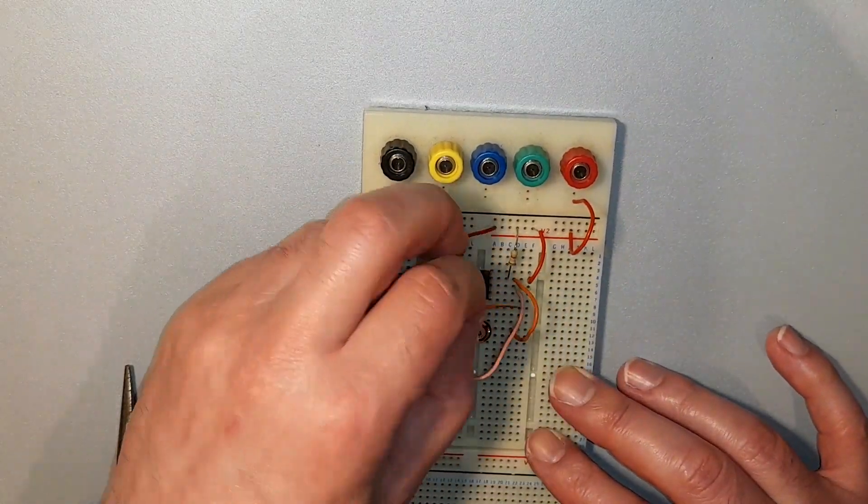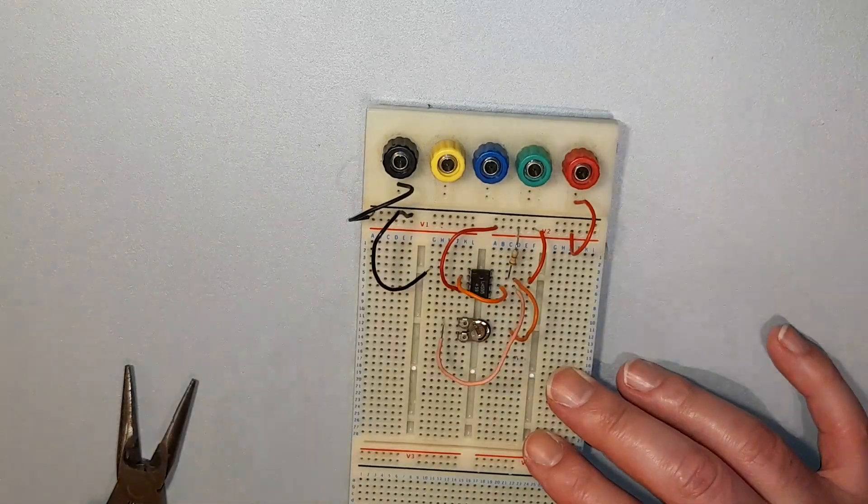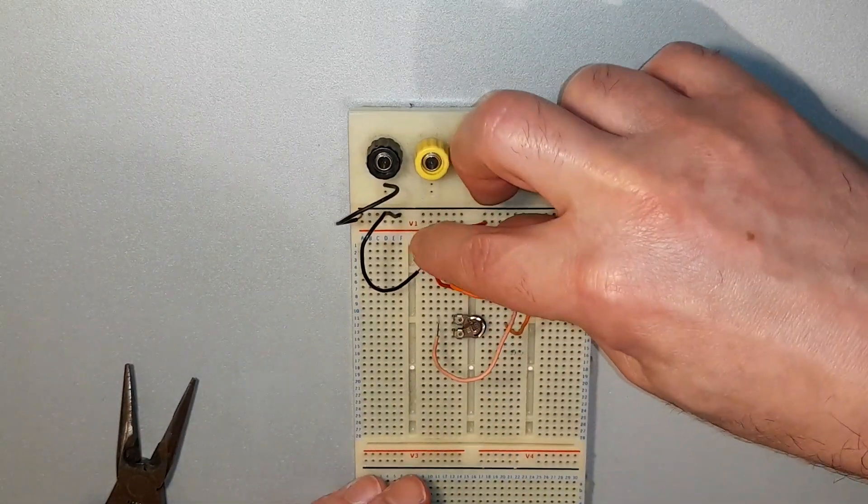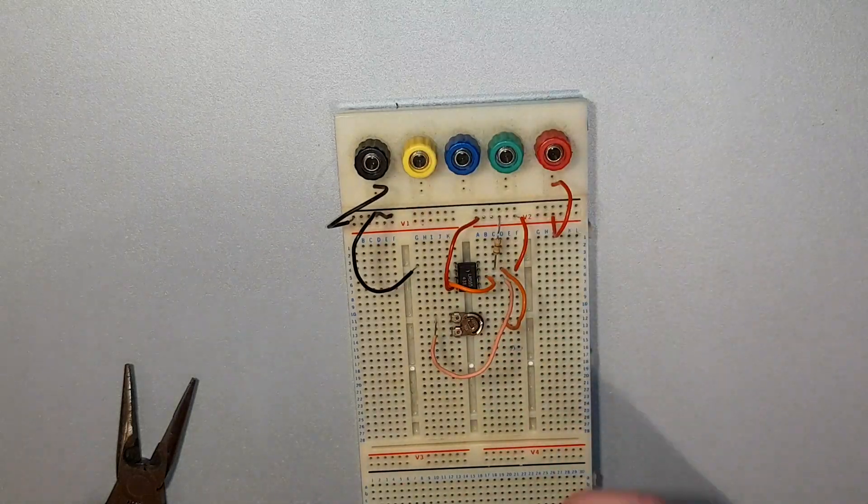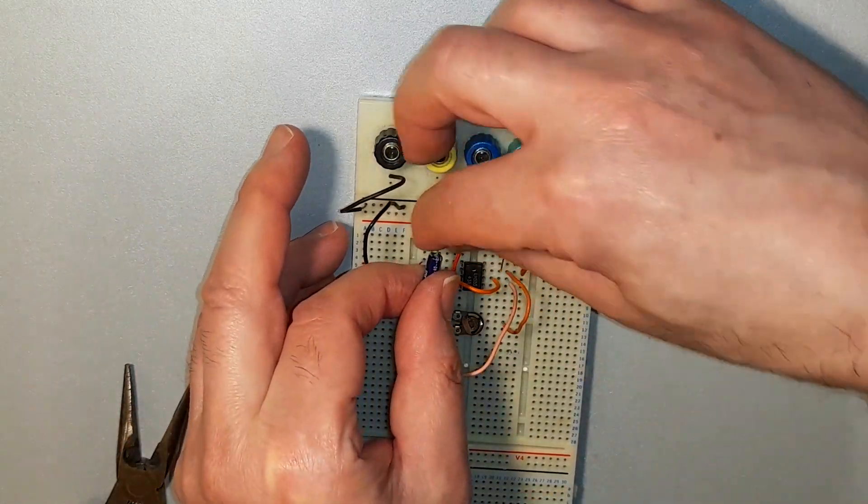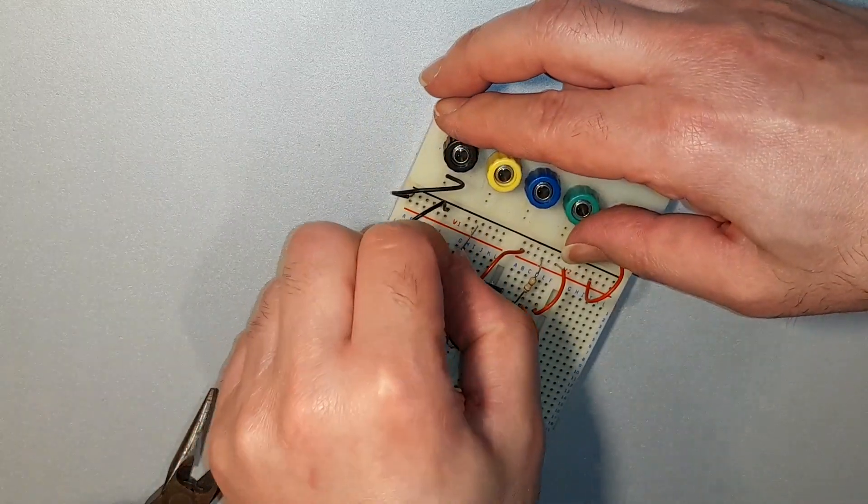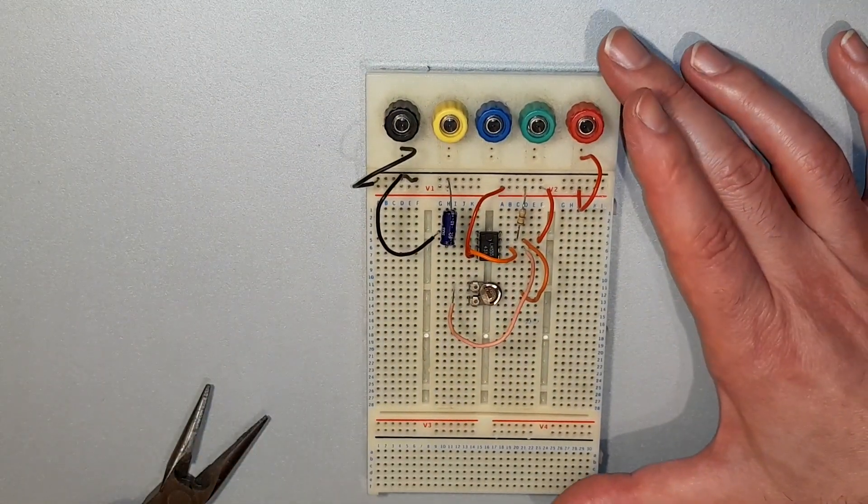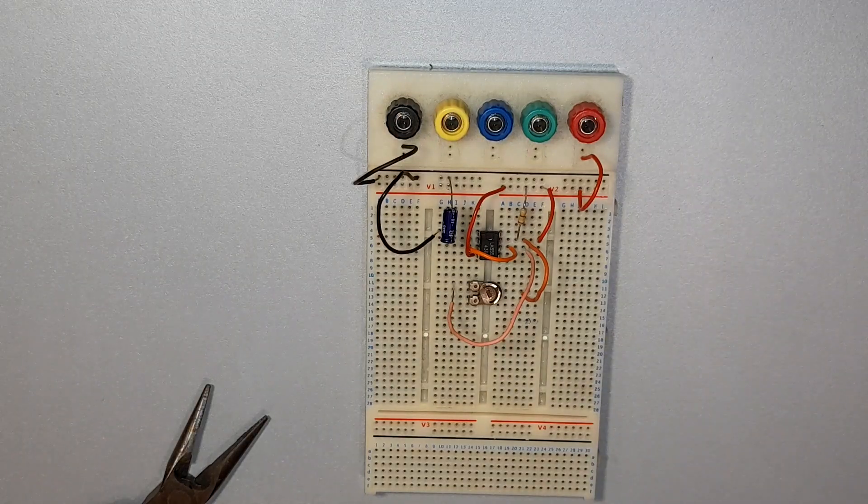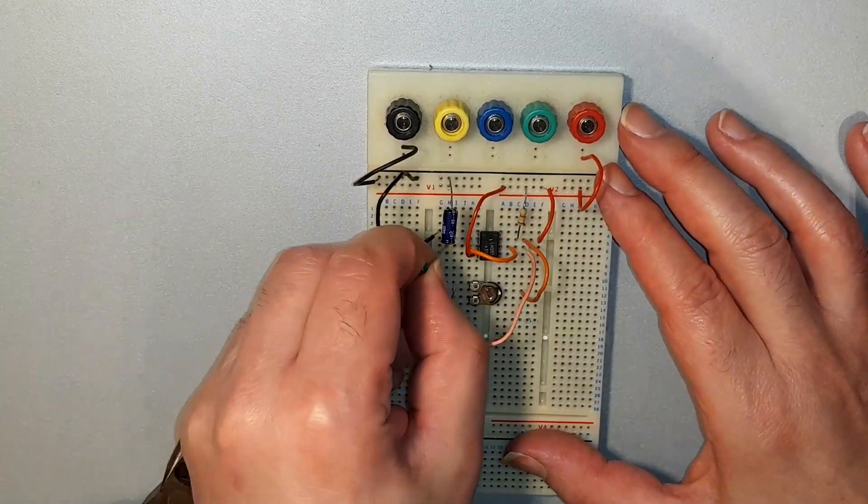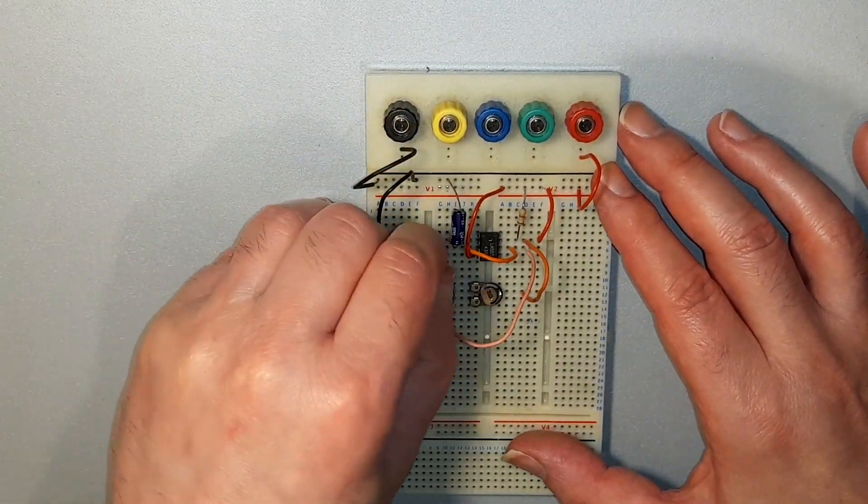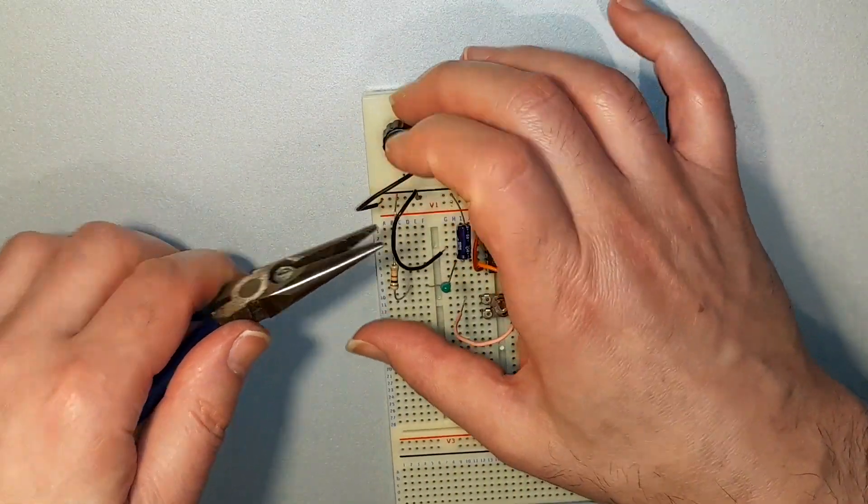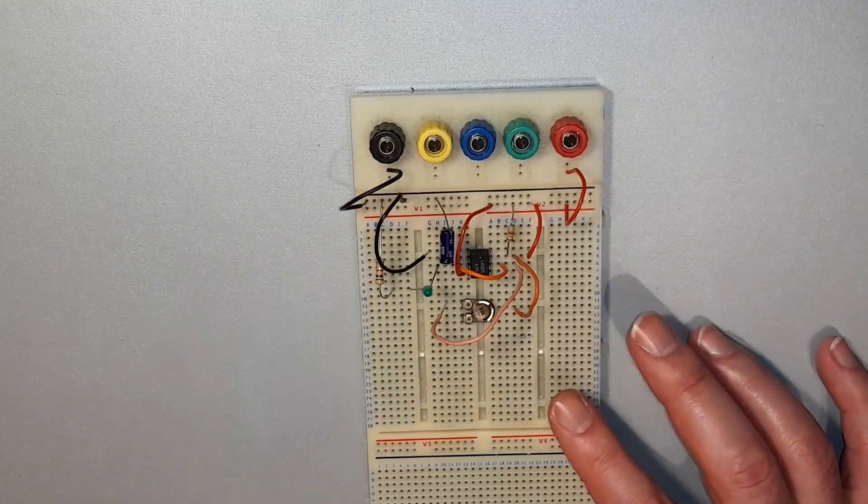The next wire in connects pin 6 to pin 2. The next component is a capacitor and I am going to try a 10 microfarad electrolytic capacitor. This goes in with pin 2 being the positive end of the capacitor and the negative end of the capacitor going to the negative of the power supply. We are almost done and I am just going to put a green LED and 1 kilo ohm resistor across the output of the 555, which is pin 3.